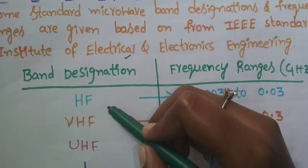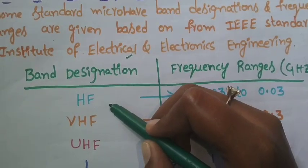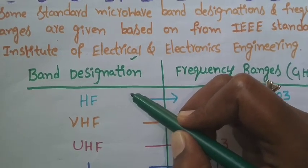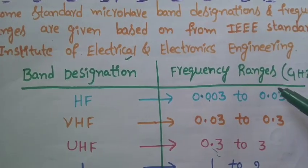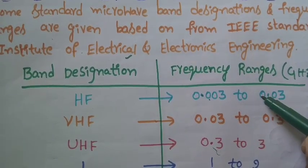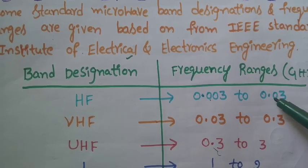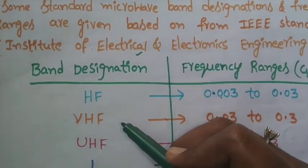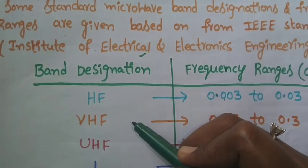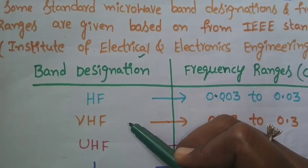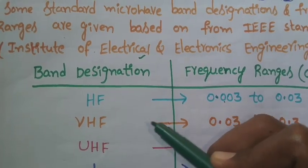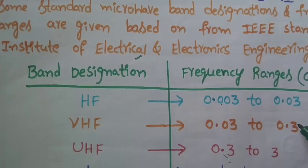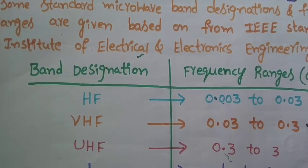The first one is HF, which stands for high frequency. For the high frequency band, the frequency range is about 0.003 to 0.03 gigahertz. VHF stands for very high frequency, and for the very high frequency band, the frequency range is 0.03 to 0.3 gigahertz.